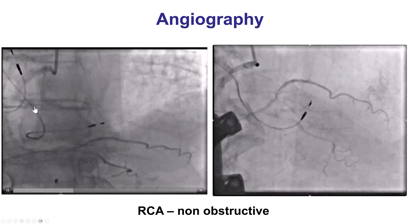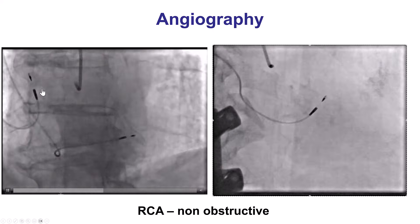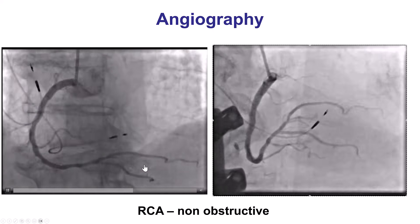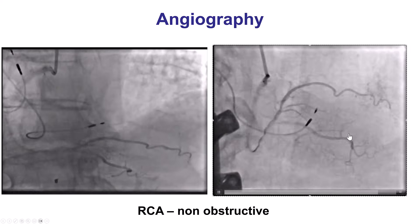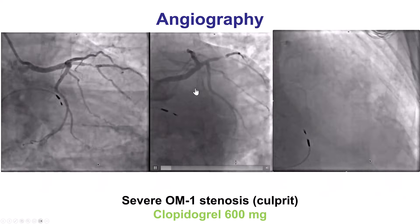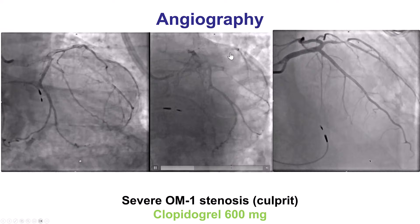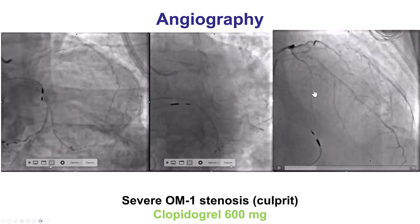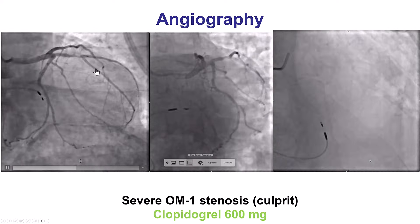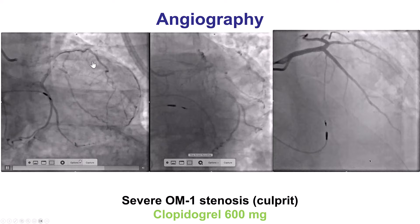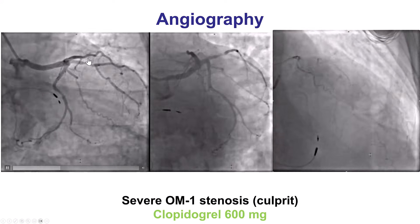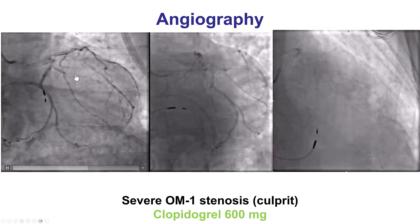Angiography demonstrated no significant lesions in the right coronary artery and the posterior descending artery. However, there was a significant lesion in the first obtuse marginal branch at the dividing point into a superior and an inferior branch. So this was the culprit lesion.